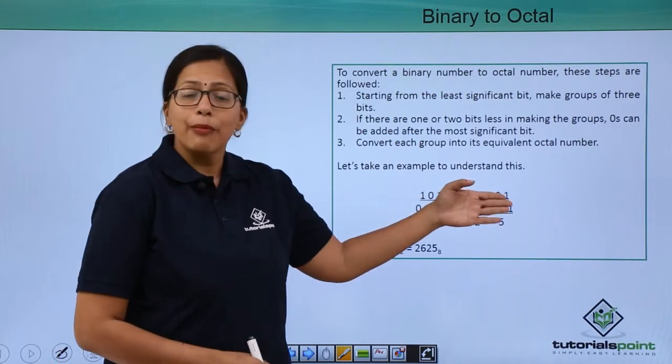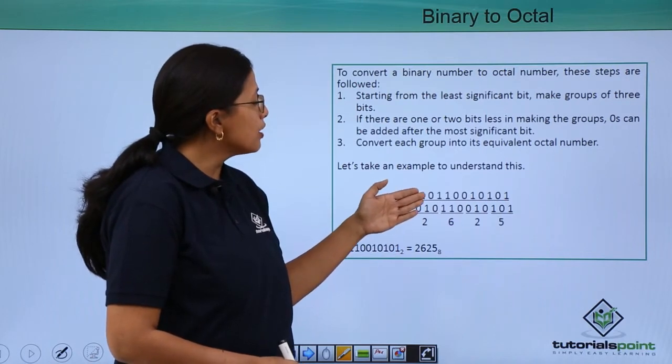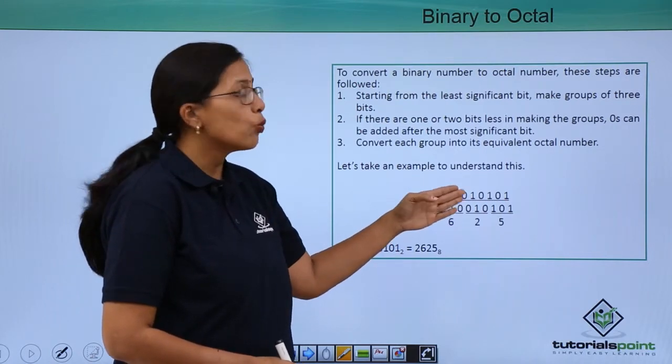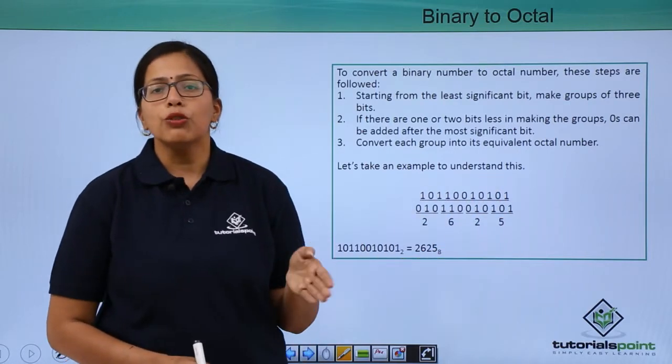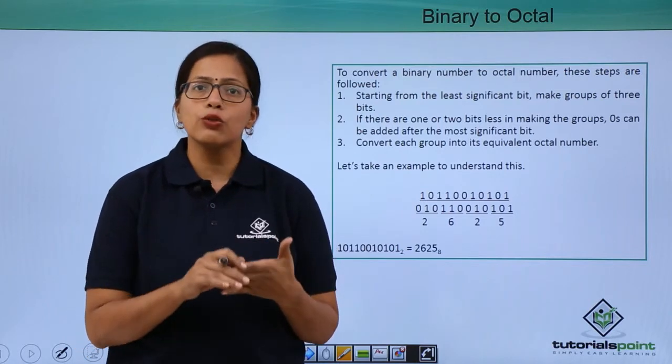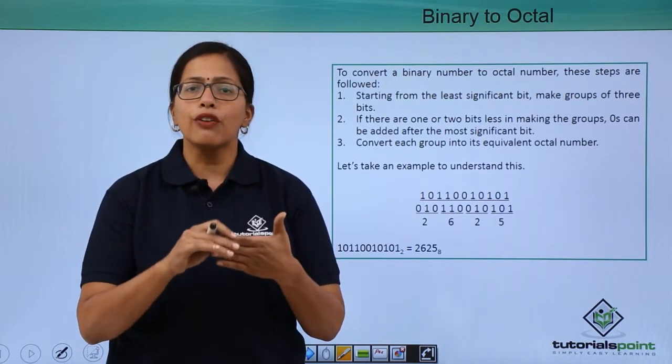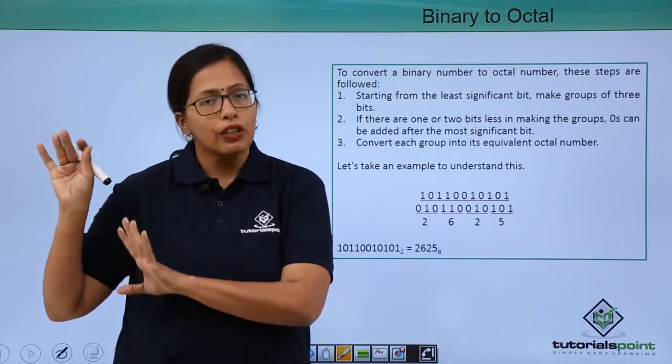I have taken an example here so that you can understand. I have taken a binary number 10110010101. To convert this into an octal number, let's first understand that octal has got 8 digits. It's to the base of 8. 8 is equal to 2 to the power of 3.